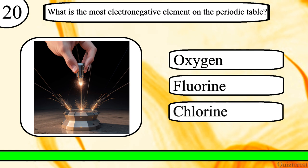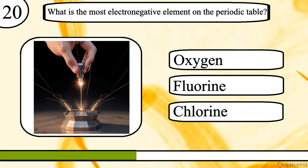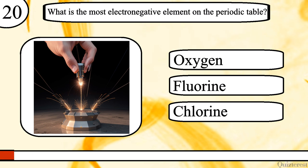What is the most electronegative element on the periodic table? Oxygen, fluorine, or chlorine? The correct answer is fluorine.